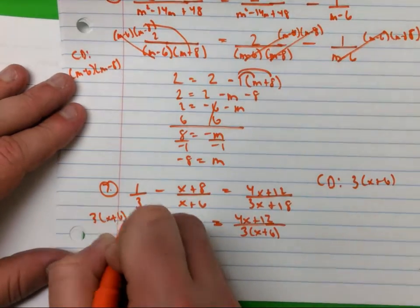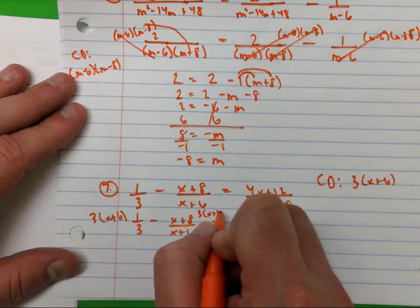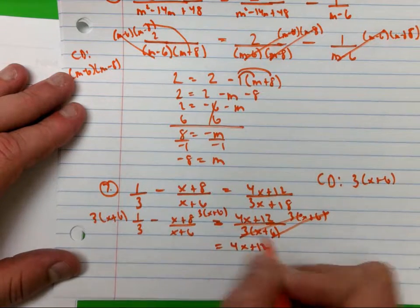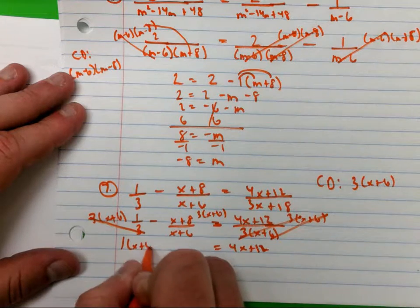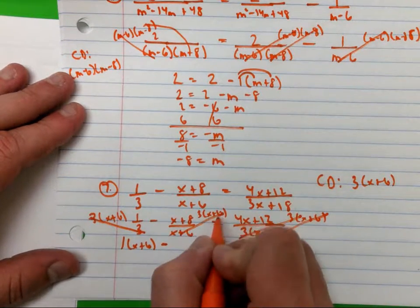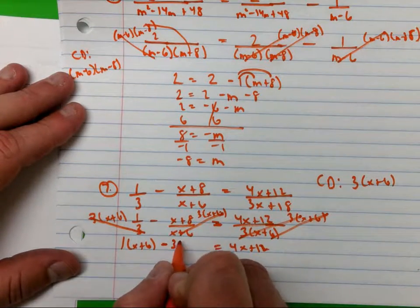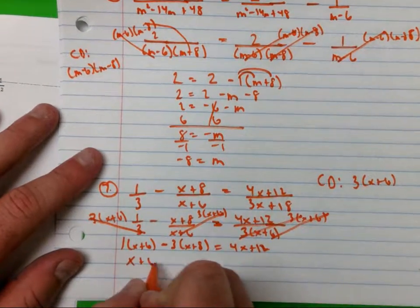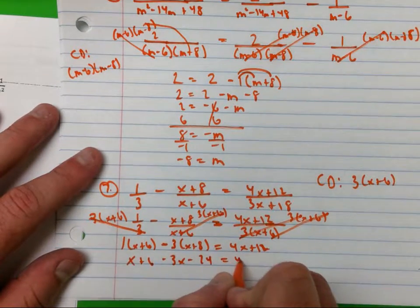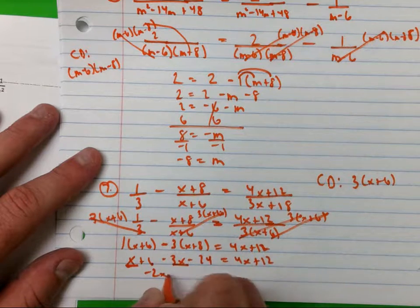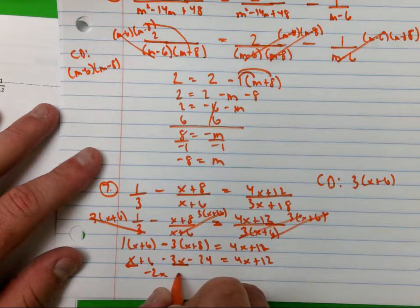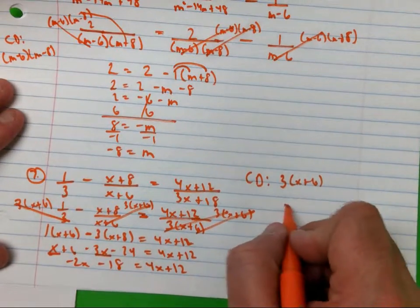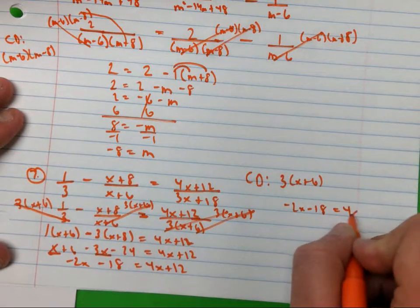I multiply everything by three times x plus six. On the right side, things cancel out and I'm left with four x plus 12. On the left, the threes cancel, leaving one times x plus six — and remember, that's a negative. The x plus sixes cancel, leaving three, so I write three times that quantity with the negative. After distributing: x plus six minus three x minus 24 equals four x plus 12. Combining terms gives negative two x minus 18 equals four x plus 12.